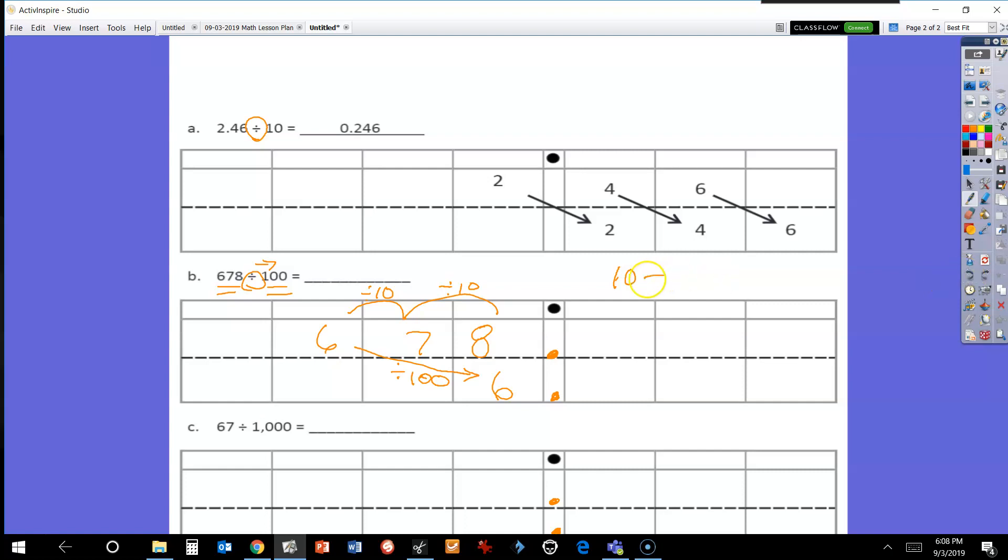You're dividing by 10 twice, which is going to give you 100. The 7 is moving from the tens place to the tenths place, and the 8 is moving from the ones place to the hundredths place, for a new number of 6.78 hundredths. We don't say 'point'—it's not 6 point 7 8, it's 6 and 78 hundredths, because you have 6 wholes and 78 hundredths of a whole. That would be 78 over 100, or 78 parts out of 100, for your final answer.